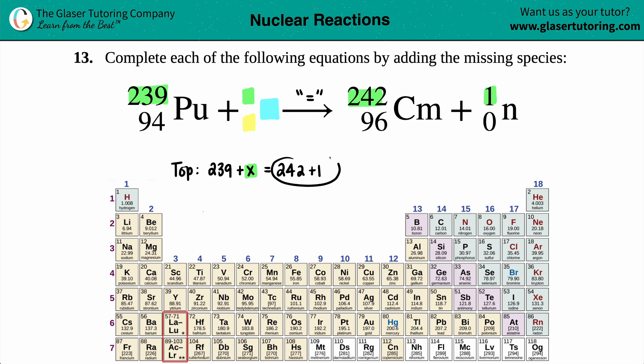We can combine these, right? 242 plus 1 is 243. So 239 plus x equals 243. And now we gotta subtract 239s, minus 239. So what do we get? This is going to cancel out and 239, 240, 241, 243... that's 4. So we have x equals 4 and that goes on the top.